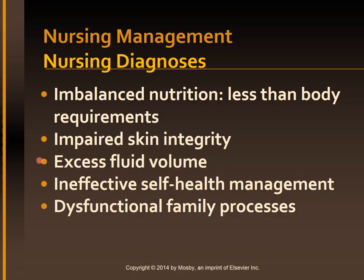Excess fluid volume related to portal hypertension and hyperaldosteronism; ineffective self-health management related to ineffective coping and abuse of alcohol; dysfunctional family process related to abuse of alcohol and inadequate coping skills, as evidenced by deterioration in family relationships, family denial, neglected obligations, and inability to accept and receive help appropriately.